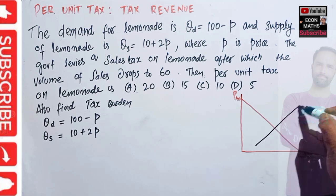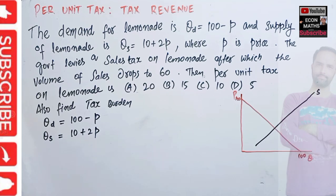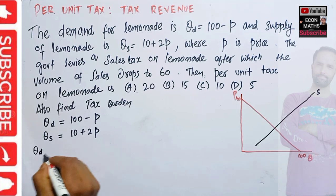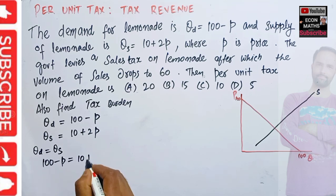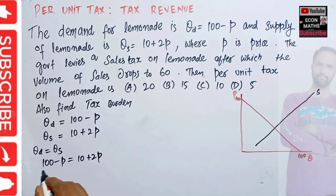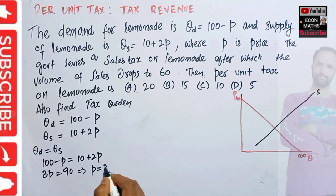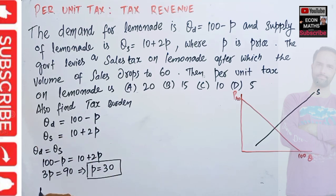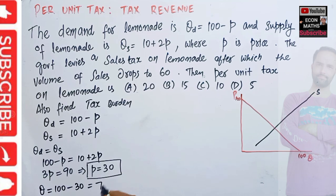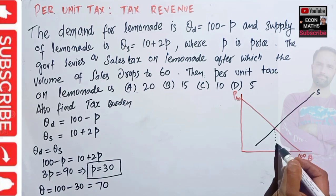We also have an upward-sloping supply function. At equilibrium, quantity demanded equals quantity supplied, which means 100 minus P equals 10 plus 2P. Solving for P: 3P equals 90, so P equals 30. Corresponding to this, the equilibrium quantity is found by plugging P = 30 into the demand function: equilibrium quantity equals 100 minus 30, which gives us 70.